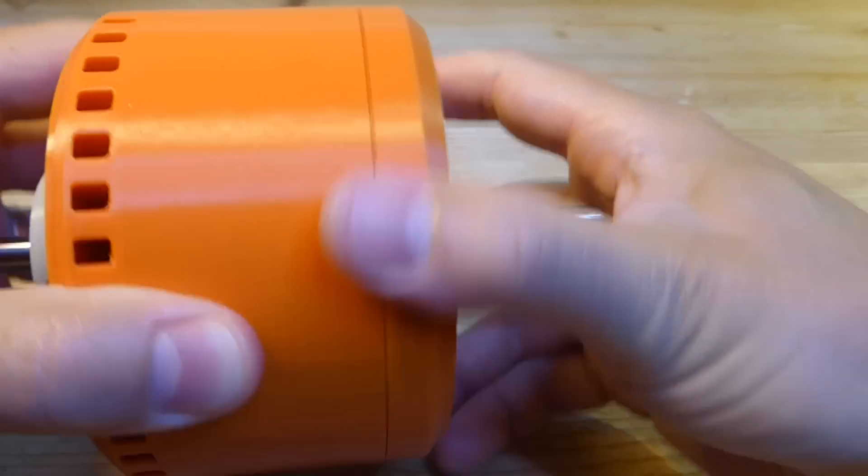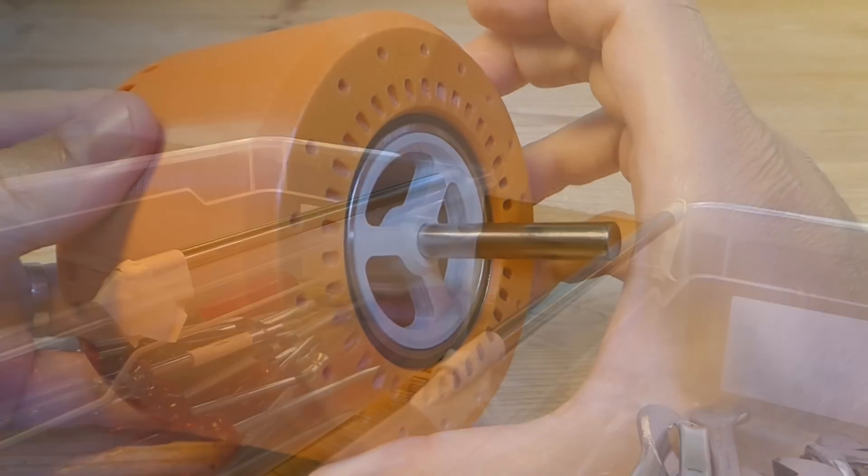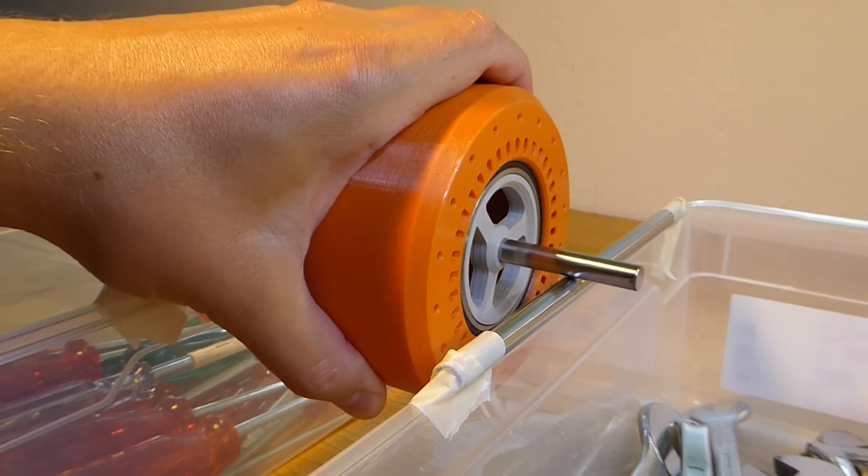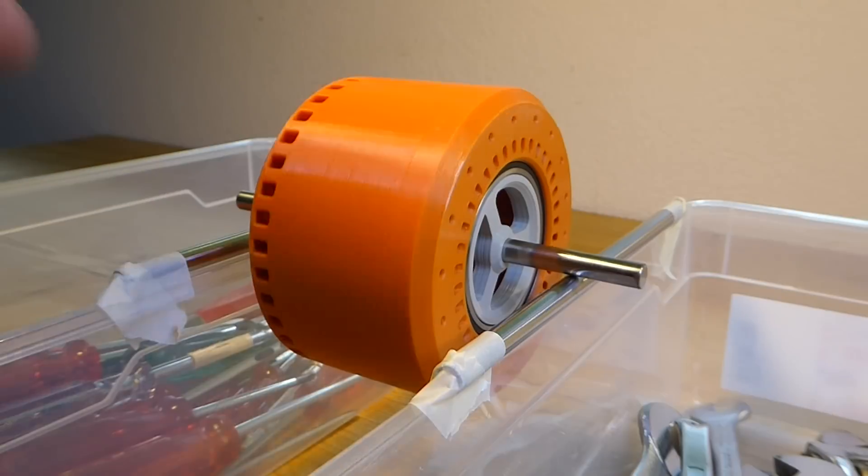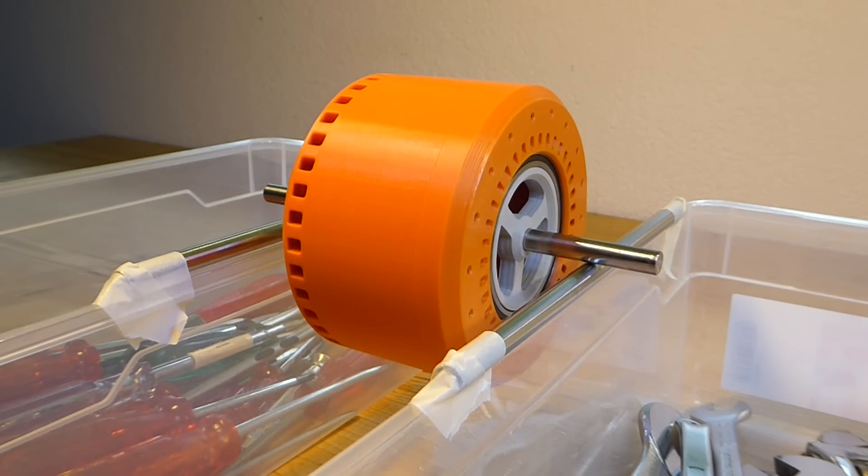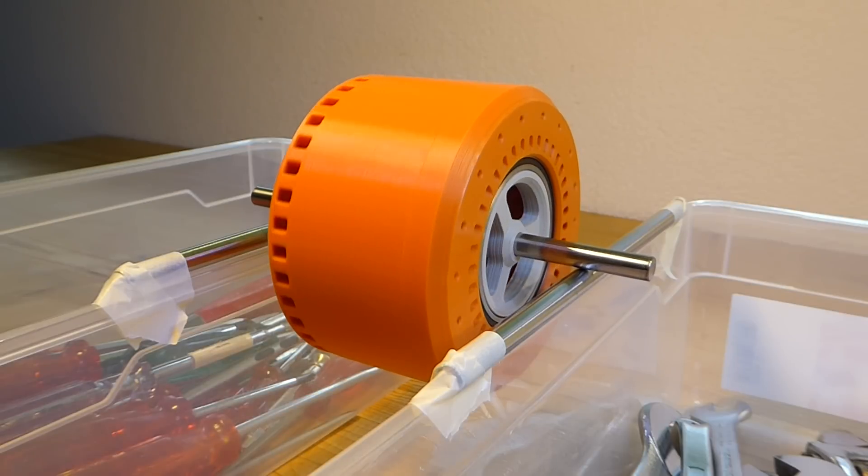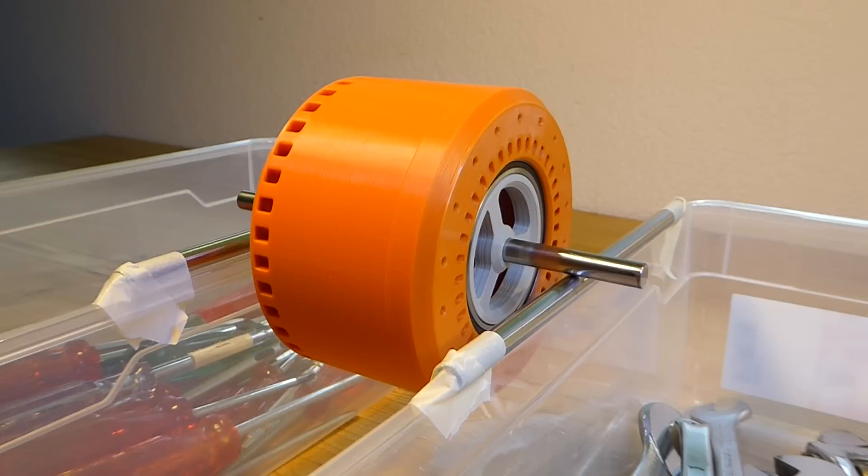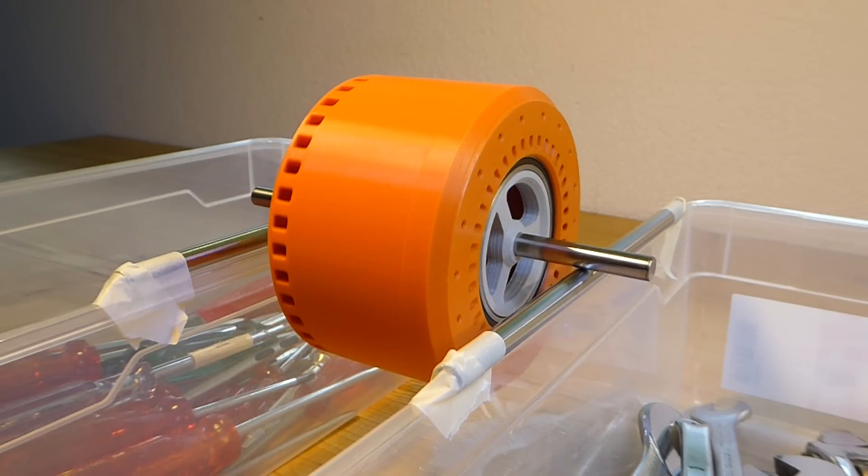After assembling the rotor including all the magnets it is placed onto two parallel and horizontally aligned rails. I am using some spare 8mm shafts. As you can see the rotor slowly starts rolling on its own and swings forth and back. After a while it will stop and the heavier side is pointing downwards.